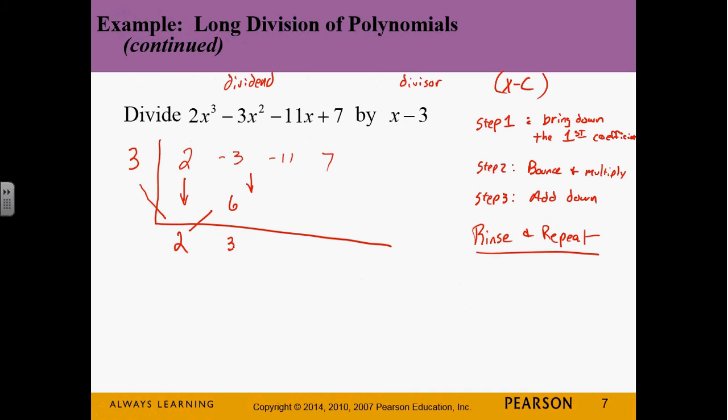Rinse and repeat. So we just keep doing that over and over again until we're done. So we're going to bounce. Three times three gives us what? Nine. And then we add down. What's negative eleven plus nine? Negative two. Three times negative two. Negative six. Seven minus six. One.